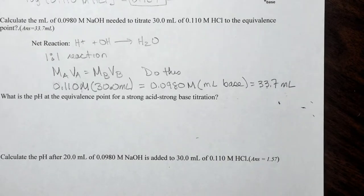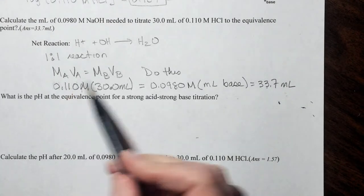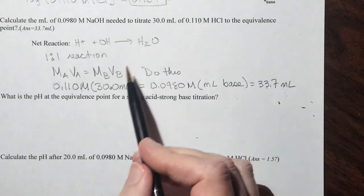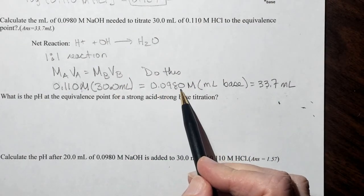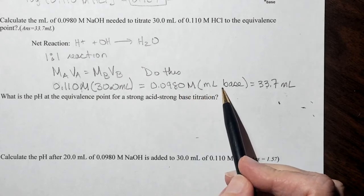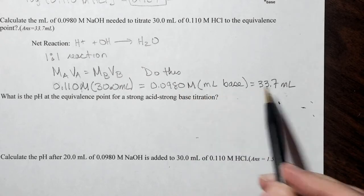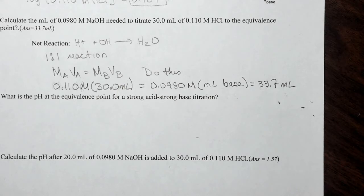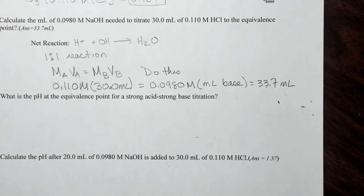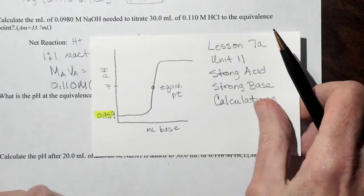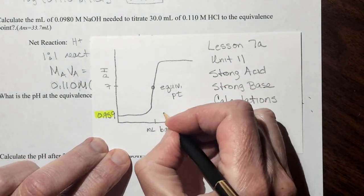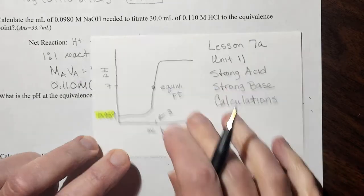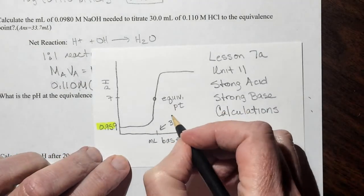Okay, so you should have had that you had 0.110 molar HCl. 30 mLs of it was needed to react with 0.0980 molar. And then the mLs of the base, and then you calculate that that is 33.7 mLs. So now what we can do is, on our little titration curve here, we can add that our equivalence point here was 33.7 mLs.